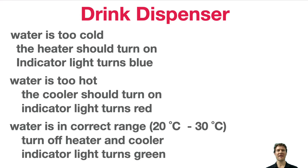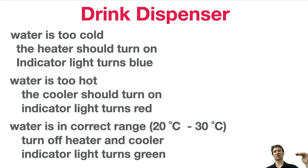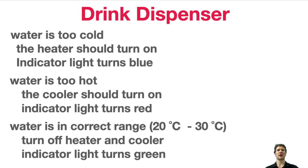Today we're going to be taking everything we learned from the last few classes and putting it all together to solve a real design problem. We want to imagine we are working with a water dispenser that we want to keep the temperature within a certain range — between 20 and 30 degrees Celsius. If the temperature gets too hot we want to cool it down, if it gets too cold we want to heat it up, and we want to use an indicator light to show which of these three states our system is in.